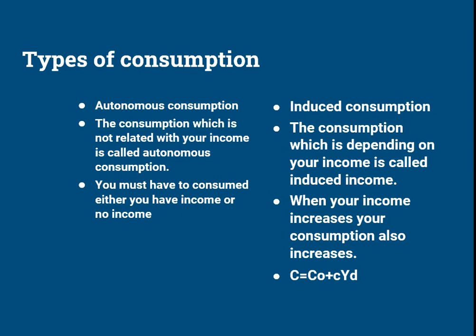Induced consumption is the consumption related to your income; when your income increases, your consumption increases. This function shows the total consumption level: C is total consumption, c₀ is autonomous consumption, and the small c represents induced consumption or MPC — marginal propensity to consume. MPC shows how much change occurs in consumption when there is a one-unit change in income. Yd is disposable income. The positive sign shows a positive relationship between induced consumption and income. Note that autonomous consumption has no income term, confirming it is not related to income.